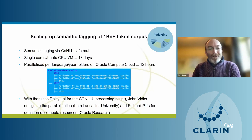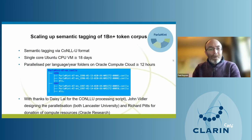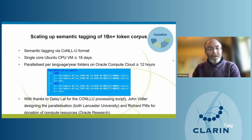One key challenge was parallelizing the USAS tagger to run efficiently over the billion-word-plus ParlaMint corpus. We performed semantic tagging on the CoNLL-U format directly and parallelized across languages and years using the data structure we received. This reduced tagging time from 18 days to just around 12 hours. Thanks to colleagues Daisy Lal for the CoNLL-U processing script, John Vidler for designing the parallelization, and Oracle Research for the compute cluster.